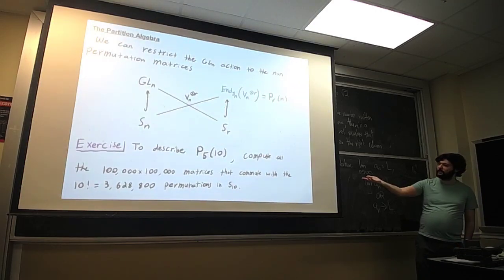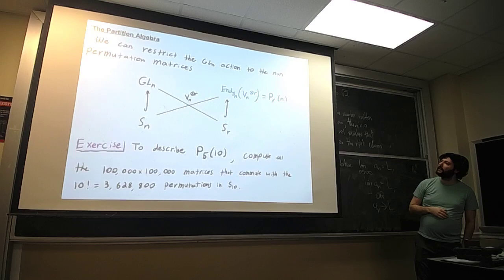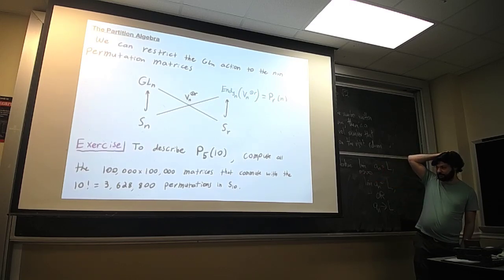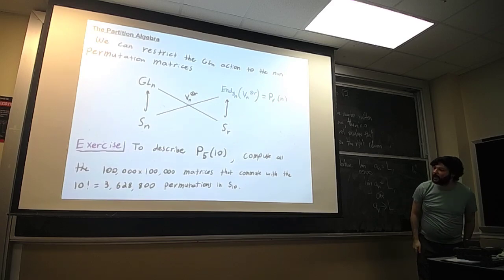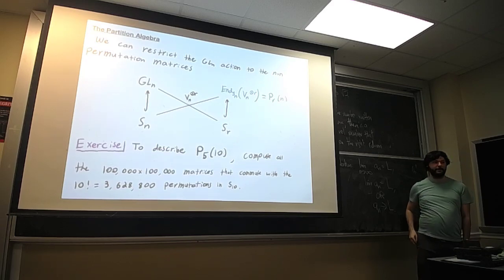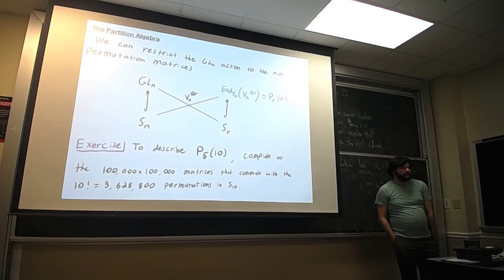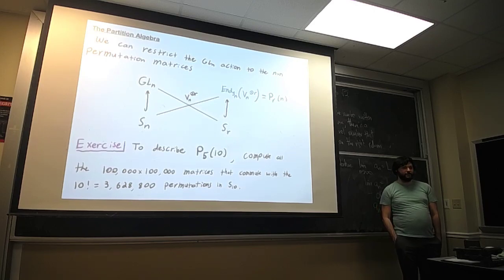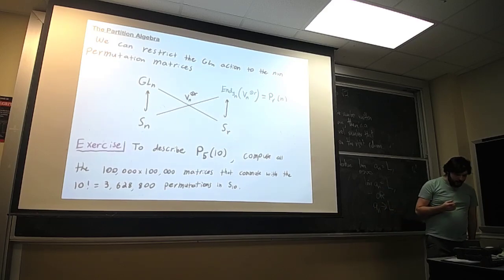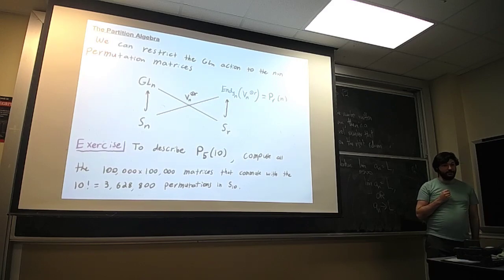I want to tell you what that centralizer looks like. As a good exercise, to describe the centralizer when r=5 and n=10, you'd need to compute all 100,000-by-100,000 matrices that commute with about 3.5 million permutations. This is hard to get a handle on — these are really big matrices with a lot of constraints.